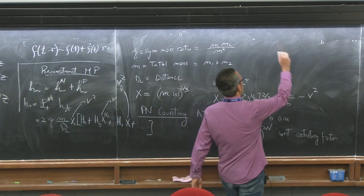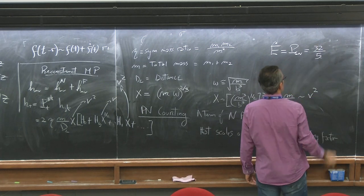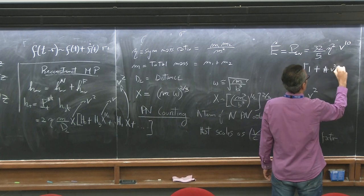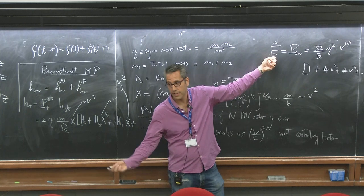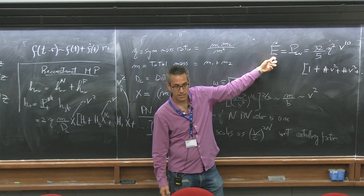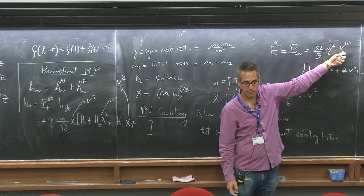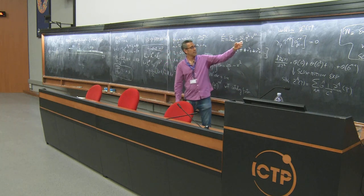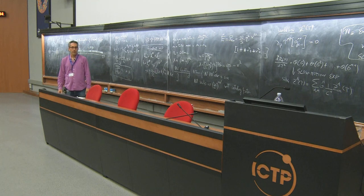If you calculate the rate of change of binding energy — the power emitted in gravitational waves — you find 32/5 times eta-squared times V^10 times a series (1 plus corrections at 1PN, 1.5PN, etc.). This V^10 is the controlling factor here, so the leading term is called Newtonian, not 5PN. So the PN order is always relative to the controlling factor of each quantity, not the absolute power of v. The energy flux is the square of the third time-derivative of the quadrupole moment.